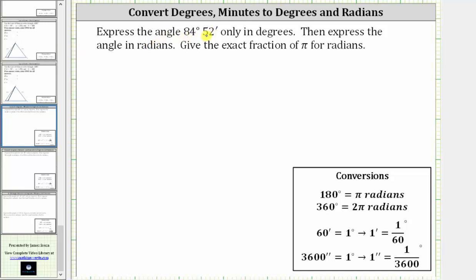We are asked to express the angle 84 degrees and 52 minutes only in degrees, and then express the angle in radians, give the exact fraction of pi for radians.